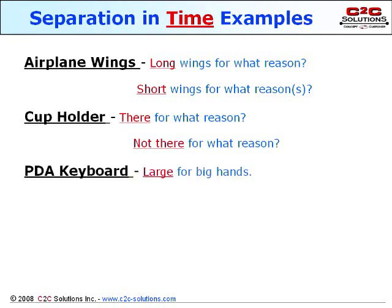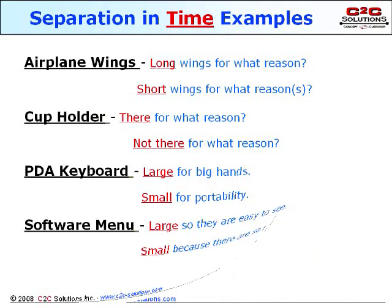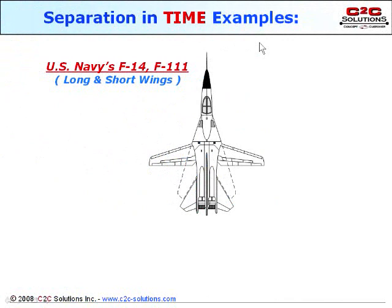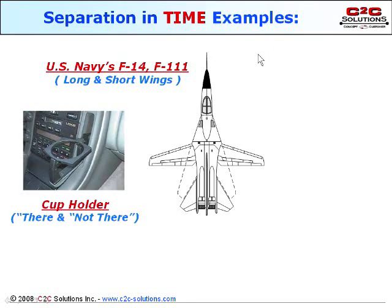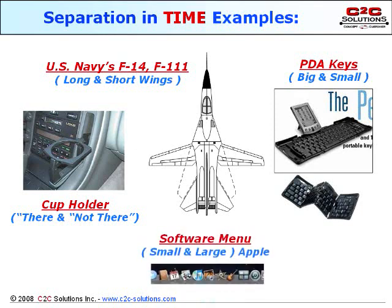PDA keyboards: you want them large because you have big hands or fat fingers, but you want them small for portability. A software menu: you want it large so you can see it easily, but small because there are so many different buttons. The U.S. Navy's F-14 and the F-111 have long and short wings, separated in time — they only need long wings during takeoff and landing. The cup holder in your car is likely to be there when you need it and not there when you don't, separated in time. The old Palm PDA has small and large keyboard, separated in time. Anyone who uses an Apple computer will know they make a very small menu bar across the bottom and it morphs to become large only when you need it large by cursoring over them.